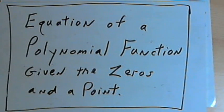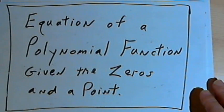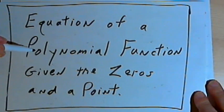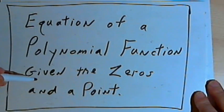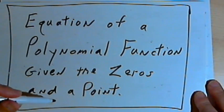This video is provided as supplementary material for courses taught at Howard Community College. In this video I want to show how to find the equation of a polynomial function when you're given the zeros and a point on its graph.